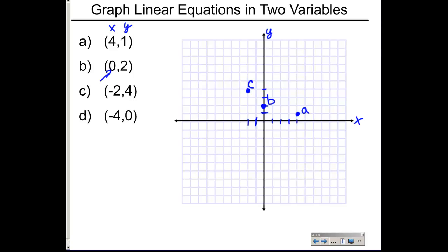For point D at (negative four, zero): we go left four on x, but don't go up or down for y. Anytime you have a zero for the y-value, or the ordinate, you will have a point somewhere on the x-axis. And that was point D.